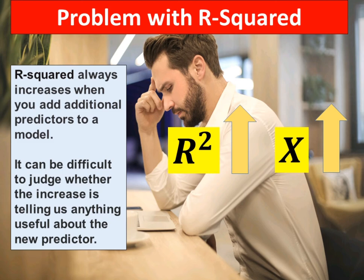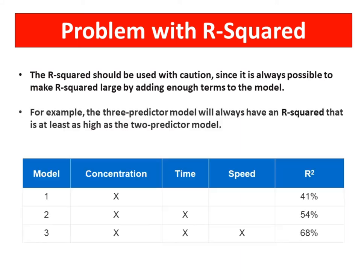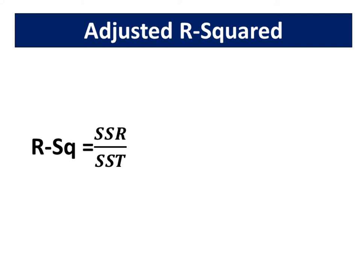One of the drawbacks of R-squared is it always increases when you add additional predictors to a model. It can be difficult to judge whether the increase is telling us anything useful about the new predictor. R-squared should be used with caution, since it is always possible to make R-squared large by adding enough terms to the model. For example, the three-predictor model will always have an R-squared that is at least as high as the two-predictor model. Instead of using R-squared, adjusted R-squared should be used to compare models with different numbers of independent variables.